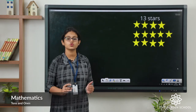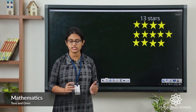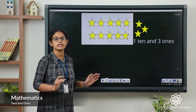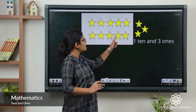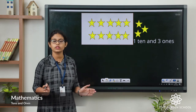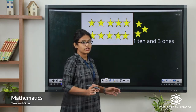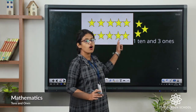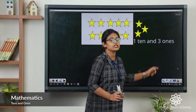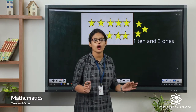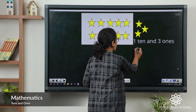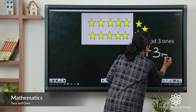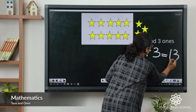First what we have to do? We have to make a group of 10 stars. See, a group of 10 stars. In one group how many stars? 10 stars. So remaining 3 stars are there. Can I make a group with 3 stars? No. So how can we write it? 1 ten and 3 ones — that is 1 group of 10 stars and 3 stars of 1 each.